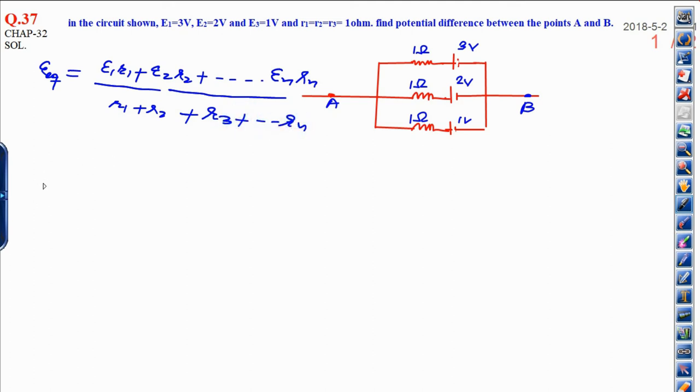Now, in this question if you want to calculate the potential difference between A and B, that means that is the EMF between A and B. It can be solved by simple way: E1 R1...